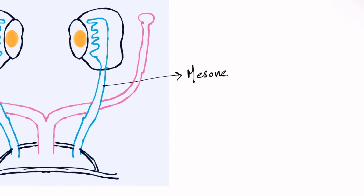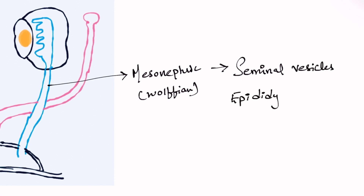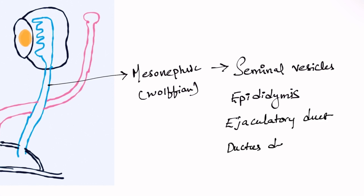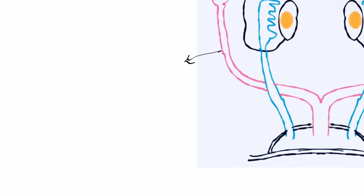Coming to what the mesonephric duct turns into: it develops into the seminal vesicles, epididymis, ejaculatory duct, and ductus deferens. These are the internal structures in a male.